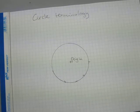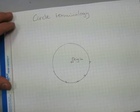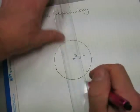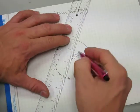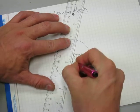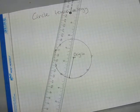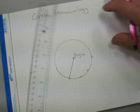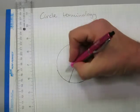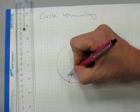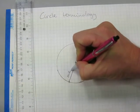That's what makes a circle. Now we can connect any of these points on the outside of the circle to the origin, and when we do that we just made a radius.